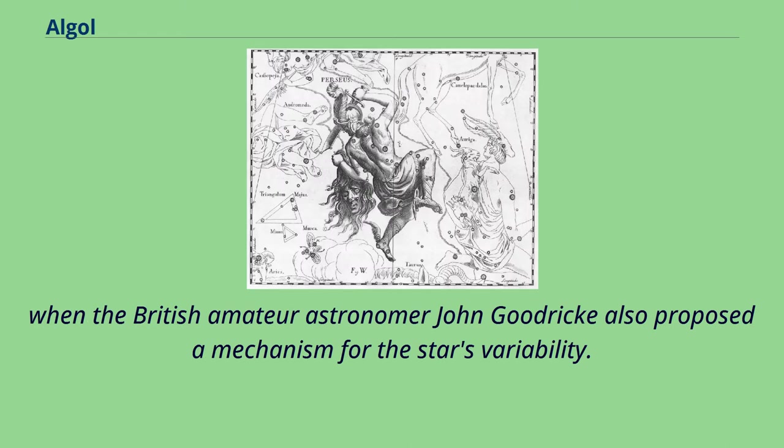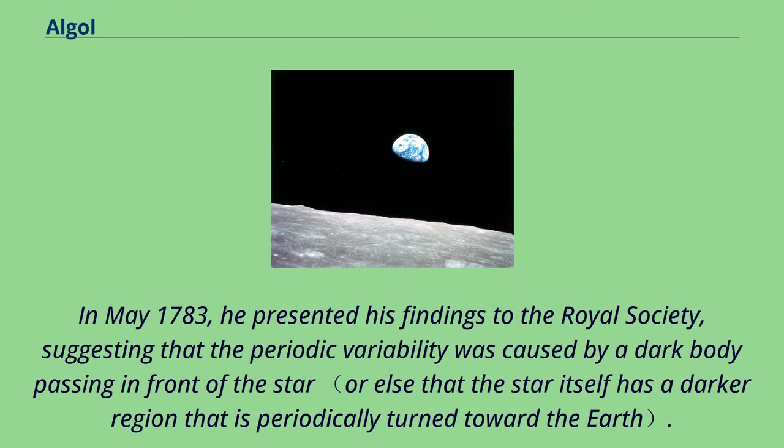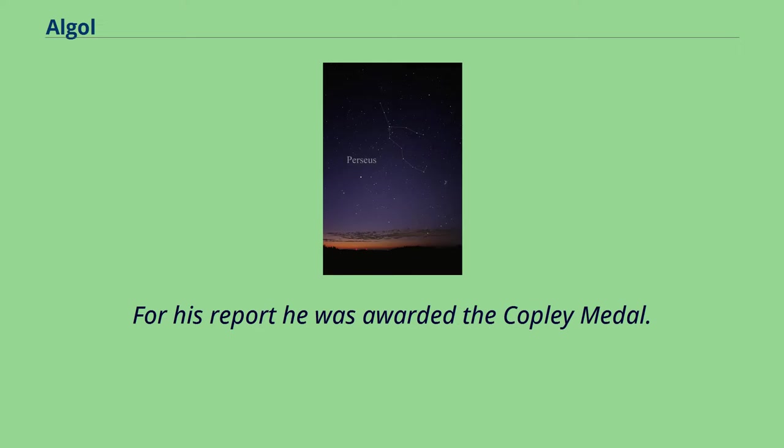When the British amateur astronomer John Goodricke also proposed a mechanism for the star's variability. In May 1783, he presented his findings to the Royal Society, suggesting that the periodic variability was caused by a dark body passing in front of the star. For his report he was awarded the Copley Medal.